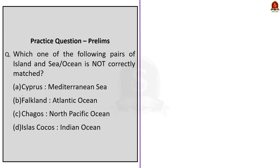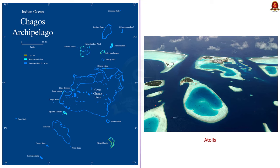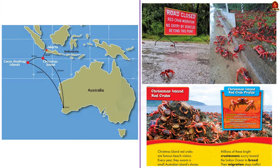This MCQ is a match-the-following question pairing islands with the oceans they are situated in, asking us to find the incorrect match. Option C states that Chagos is in the North Pacific Ocean — this is wrong because the Chagos Archipelago is in the Indian Ocean. The Chagos Archipelago is a cluster of seven atolls located in the central Indian Ocean, with Diego Garcia being the biggest island. It is actually a disputed territory between the United Kingdom and Mauritius.